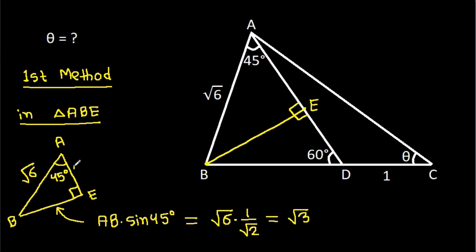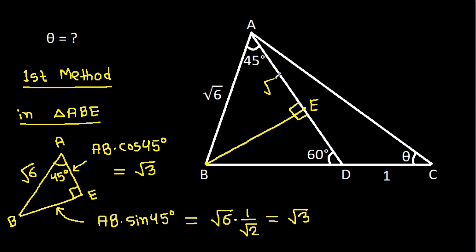And AE will be AB × cos 45° = √3. So we get AE is √3 and BE is √3.